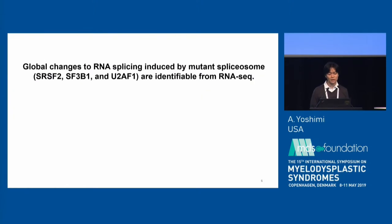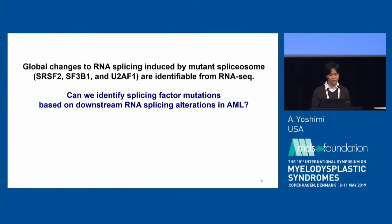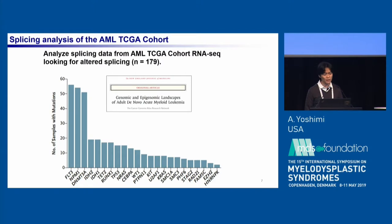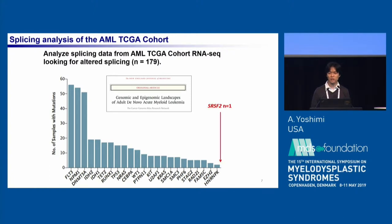Global changes to RNA splicing induced by mutant splice factors are identifiable from RNA sequencing data. We asked if we can identify splicing factor mutations based on downstream RNA splicing alterations in AML. For this purpose, we analyzed the RNA sequencing dataset from the AML TCGA cohort, and in the previous TCGA publication only one patient was reported to have a SRSF2 mutation.